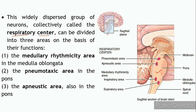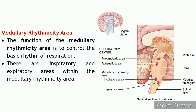There are three areas that function as the respiratory center to control respiration. The first is the medullary rhythmicity area, located in the medulla oblongata. The second is the pneumotaxic area, located in the pons. The third is the apneustic area, also located in the pons. So the respiratory center is located in the pons and the medulla oblongata.